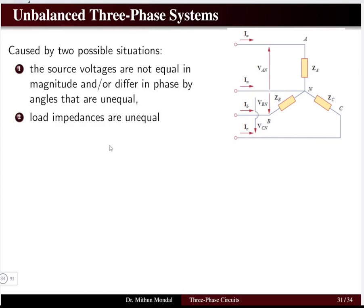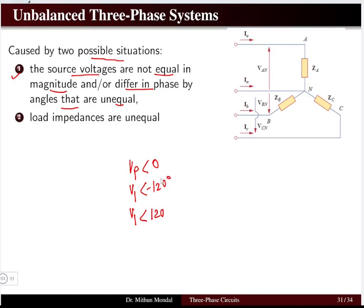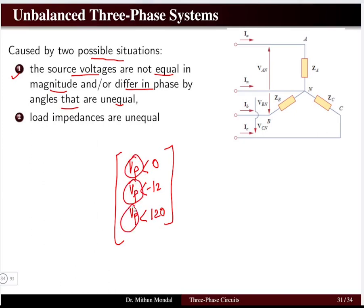An unbalanced three-phase system may occur due to two possible situations. The first situation is when the source voltages are not equal in magnitude, or differ in phase by angles that are unequal. In a balanced system, the three-phase source voltages have the same magnitude with a phase difference of 120 degrees. When the magnitudes are different or the phase angles are unequal, the system is said to be in an unbalanced condition.